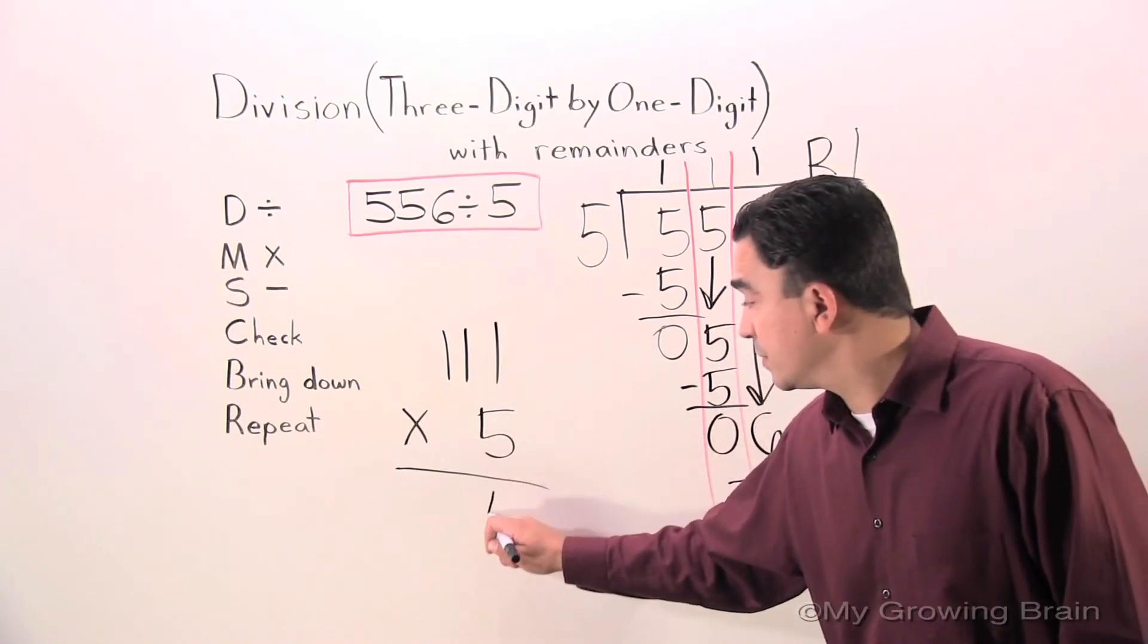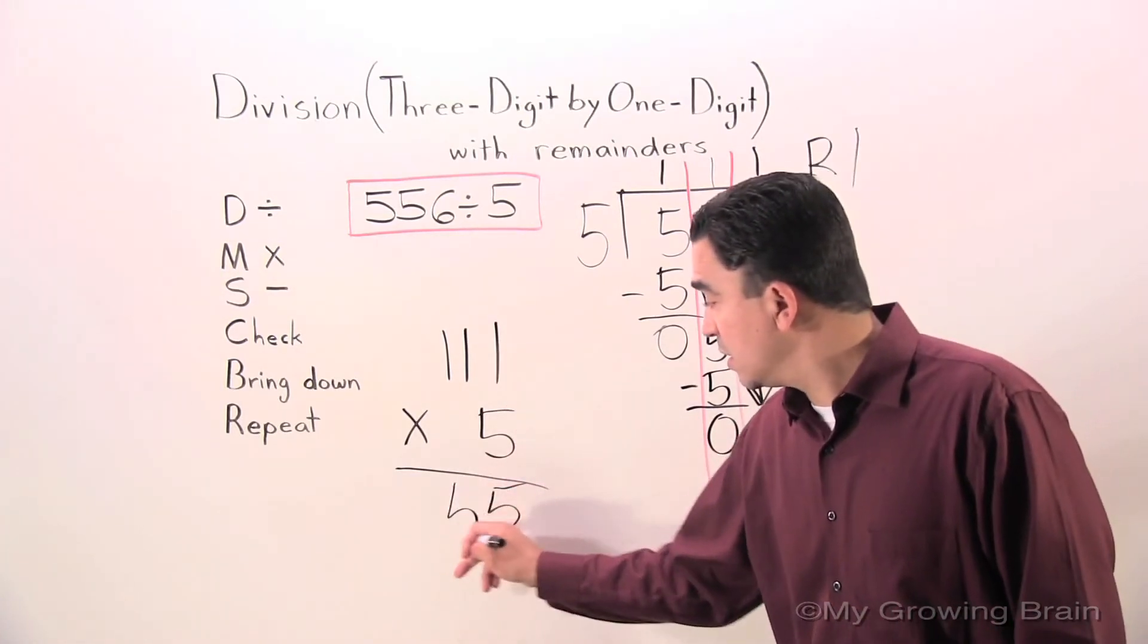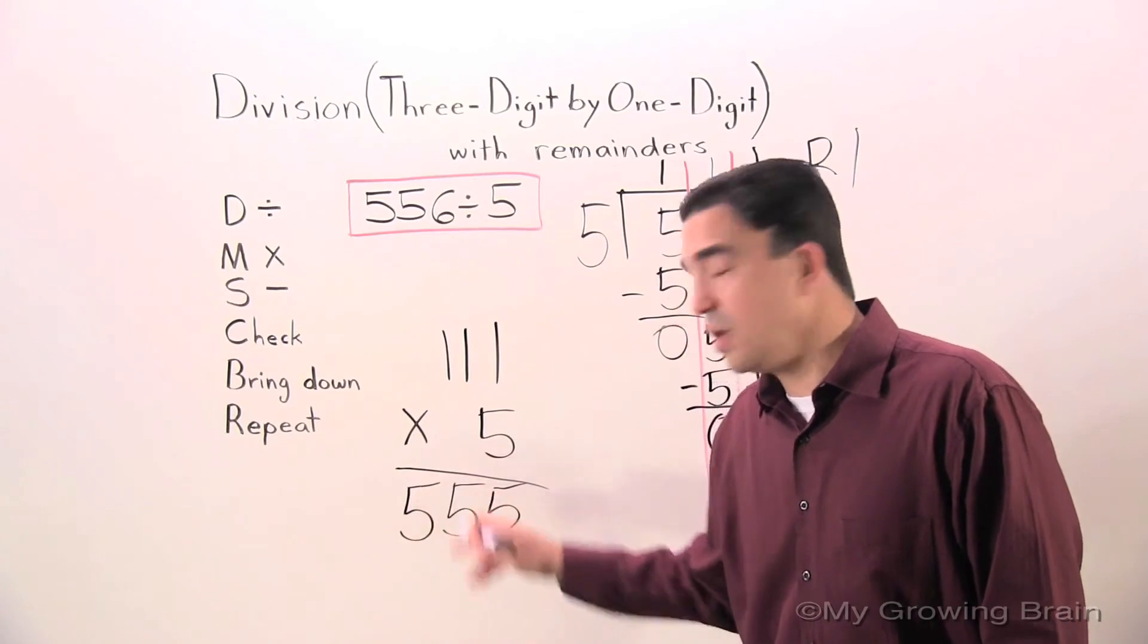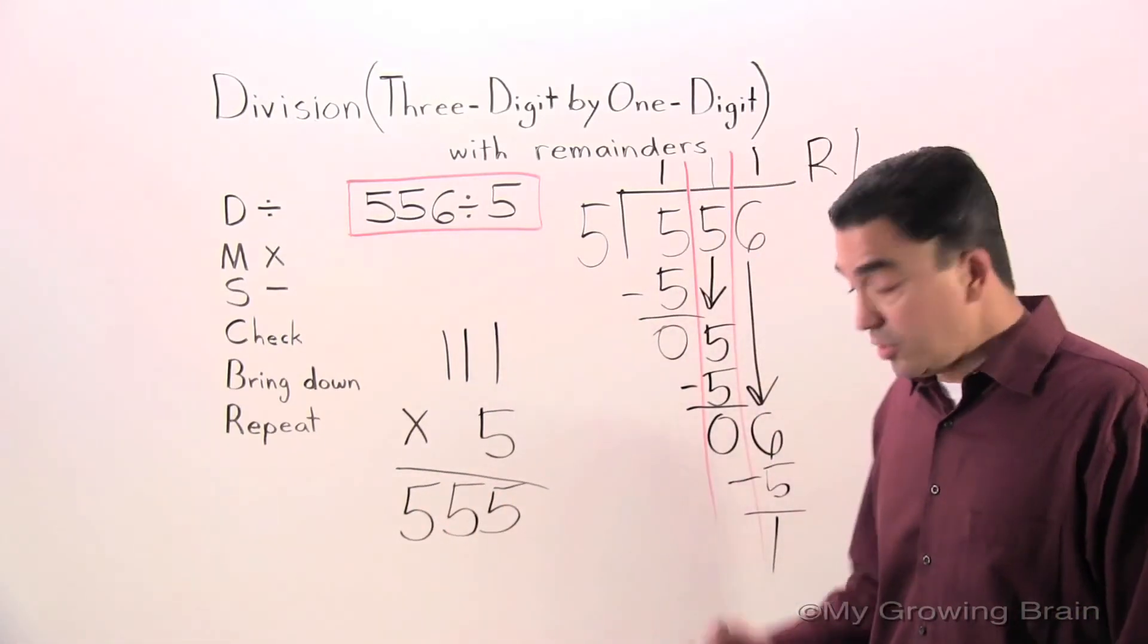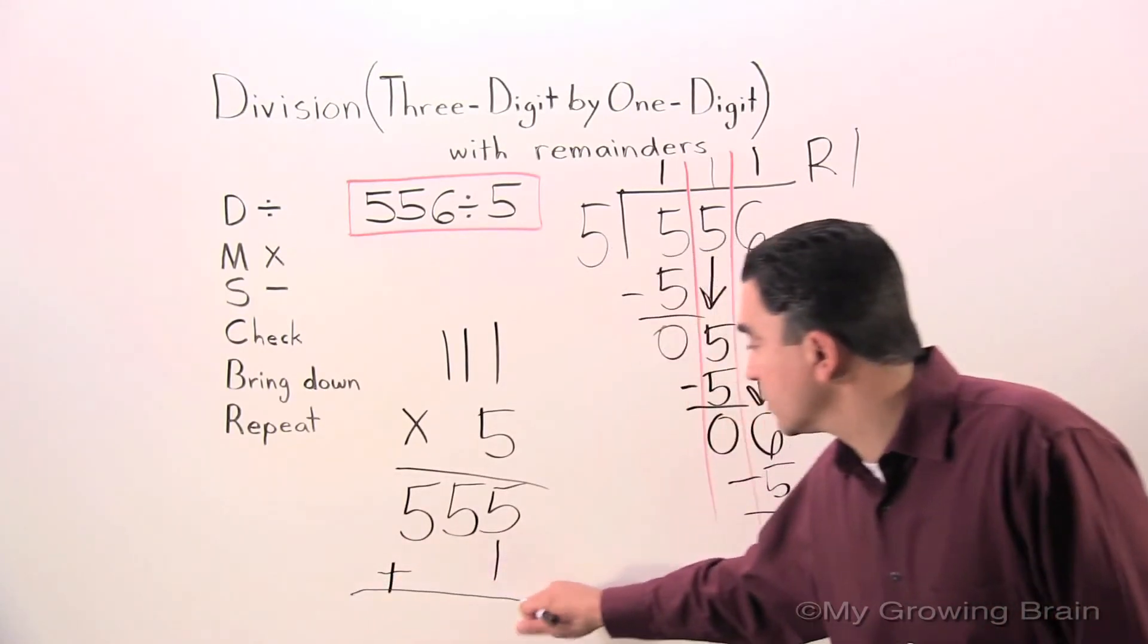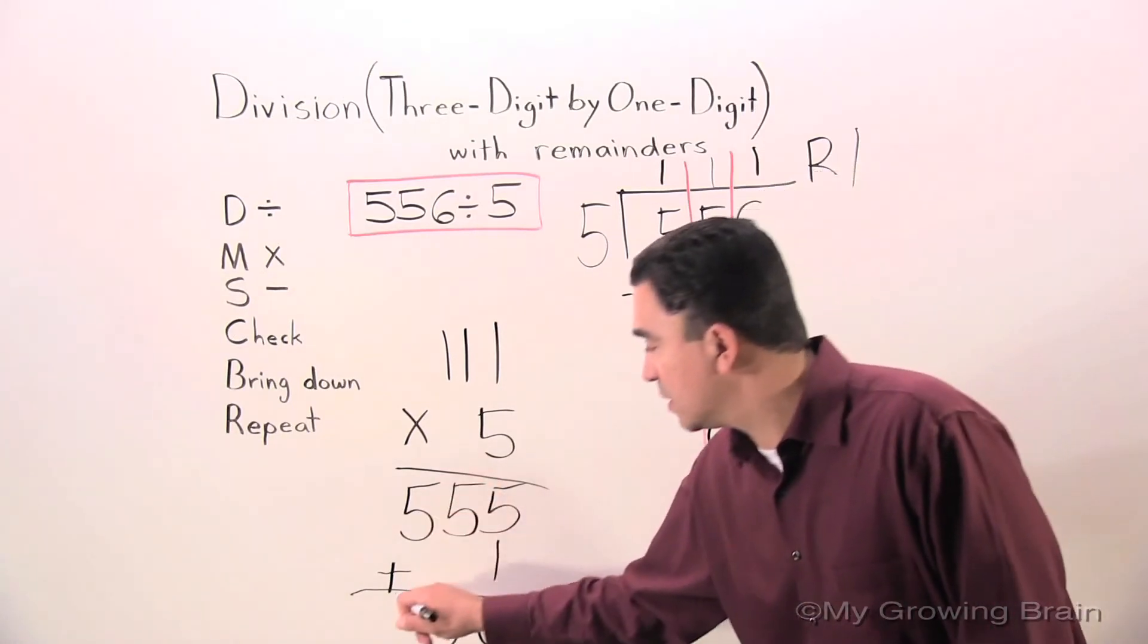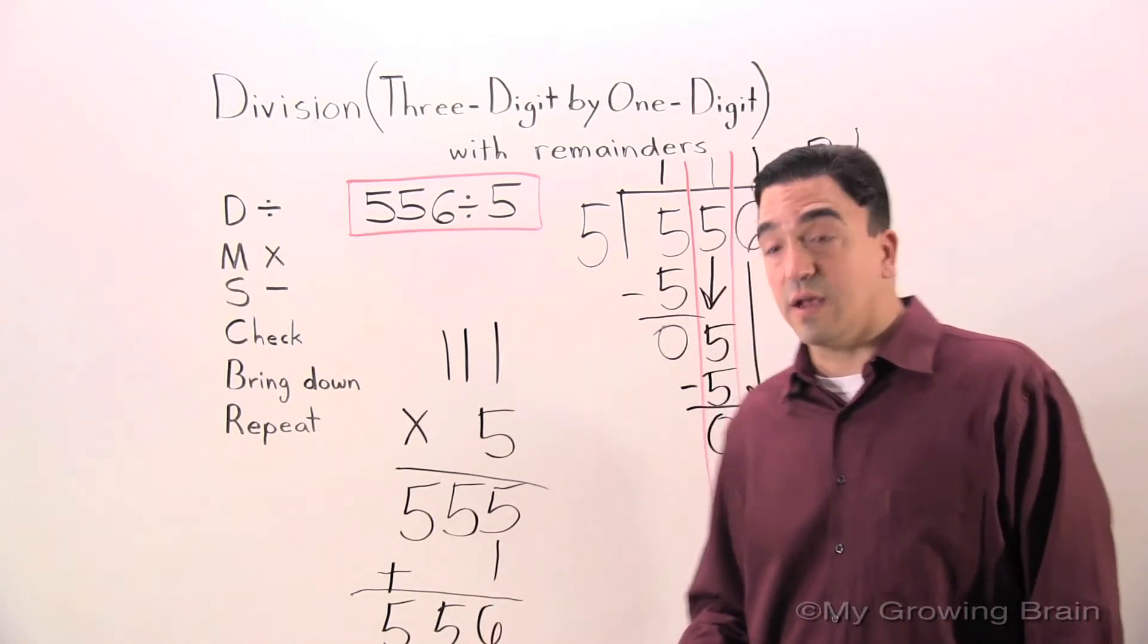Five times one, five. Five times one, five. Five times one, five. We're still not done. We have to add a remainder. Five plus one, six, five, five. Our answer is 556.